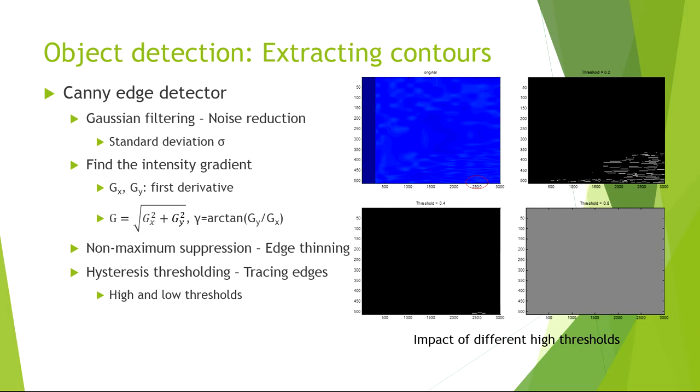After thinning the edges, we find the edges using hysteresis thresholding. The higher the high threshold is, the less contours it will extract.